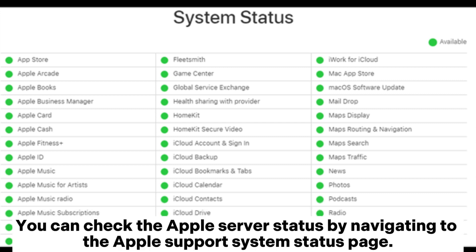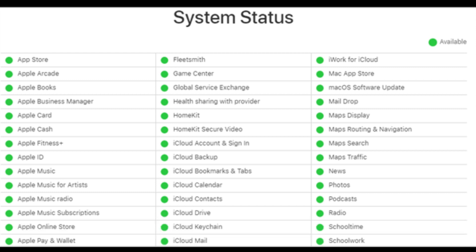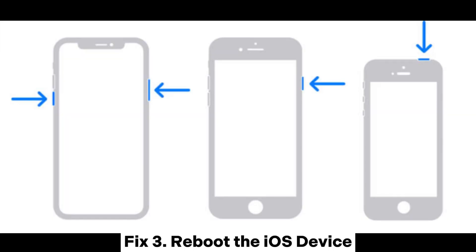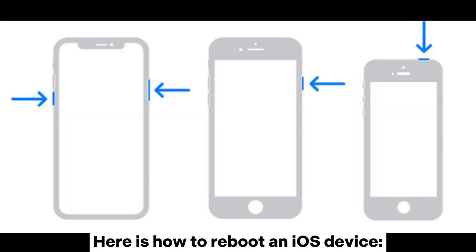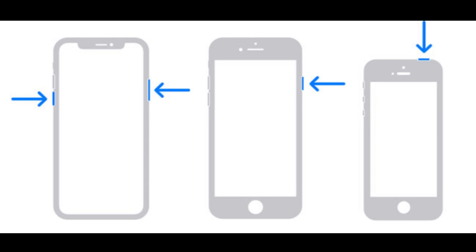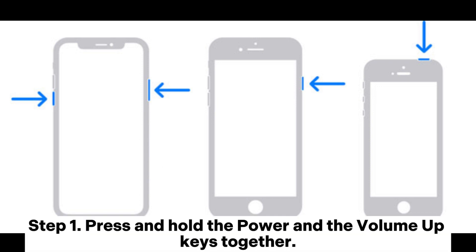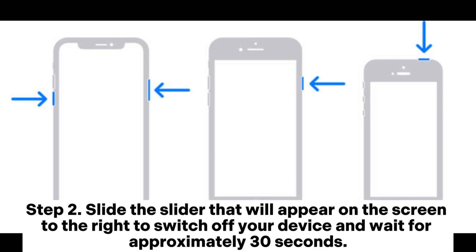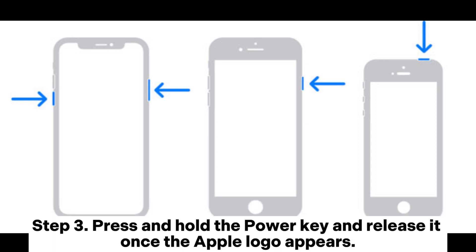You can check the Apple server status by navigating to the Apple Support System Status page. Fix three: reboot the iOS device. Step one: press and hold the power and the volume up keys together. Step two: slide the slider that appears on the screen to the right to switch off your device, and wait for approximately 30 seconds.